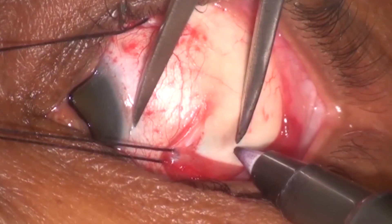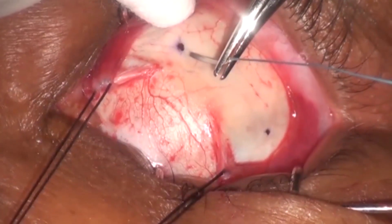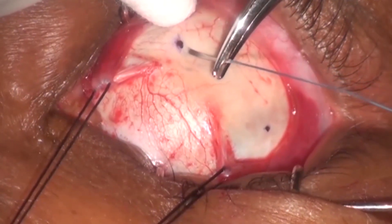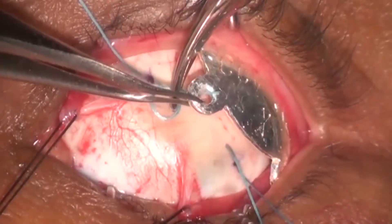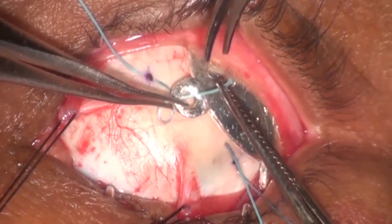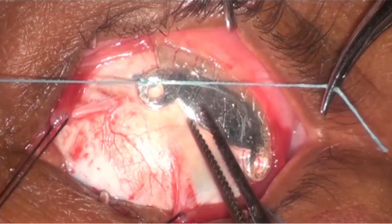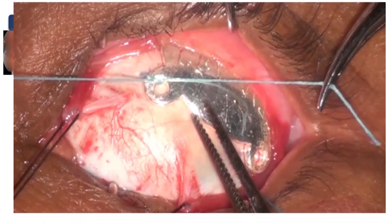After marking the suture site from the limbus as per the dimensions of the tumor and distance from the optic nerve, scleral sutures were carefully passed. Notched plaque was placed and sutured over the sclera carefully, and conjunctiva was closed.